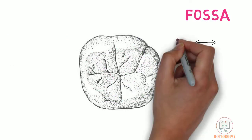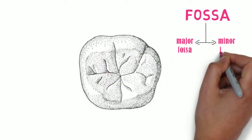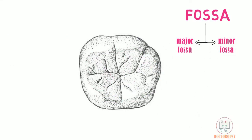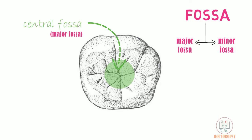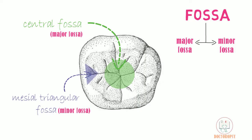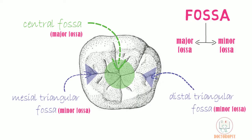There is one major fossa and two minor fossae. The major fossa is the central fossa, which is roughly circular in shape and is present in the center of the occlusal surface. The two minor fossae are the mesial triangular fossa and distal triangular fossa, which are adjacent to the respective marginal ridges.